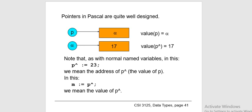A constant pointer stores a constant memory address — it cannot be modified once defined and will always point to the same address. A pointer to constant points to a value that cannot be modified — we can only access the data pointed to by the pointer but cannot modify it, although we can change the address stored in the pointer itself.